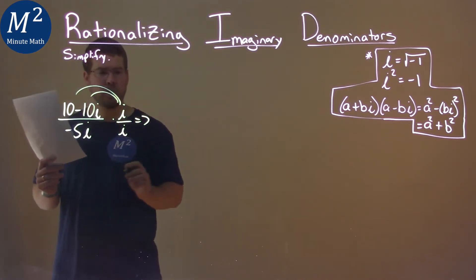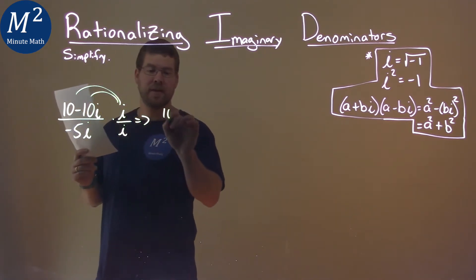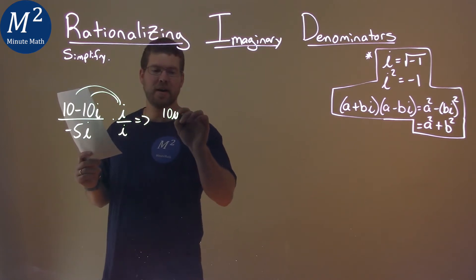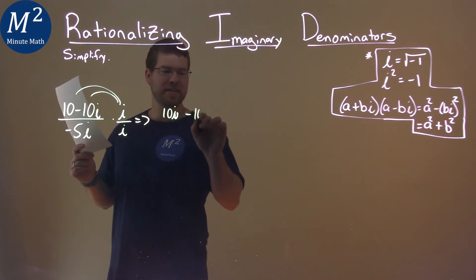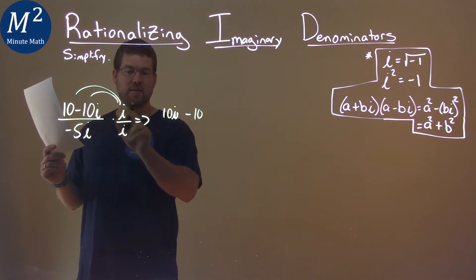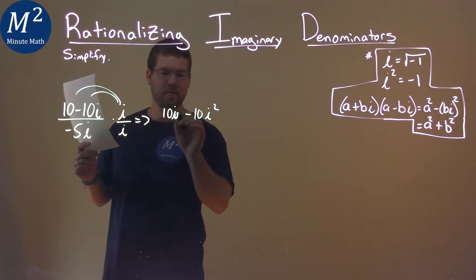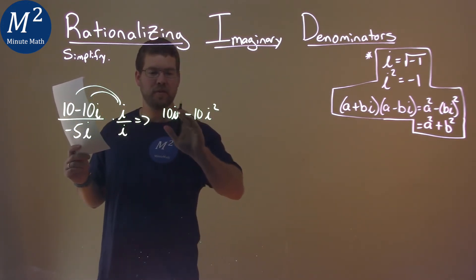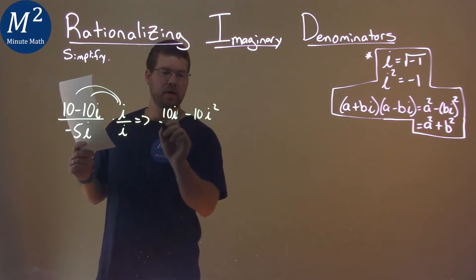Distribute first the i in the numerator. i times 10 is 10i. Minus 10i times i is 10i squared.